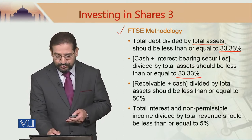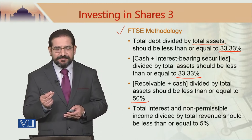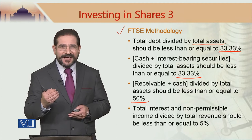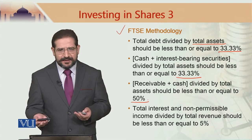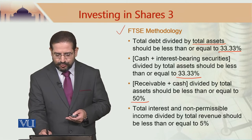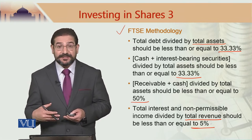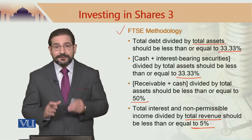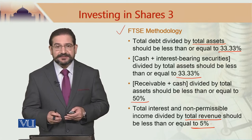Cash plus interest-bearing securities divided by total assets should not exceed 33.33%. Receivables plus cash divided by total assets should be less than or equal to 50%. They have changed the language slightly — instead of 'should be less than 50%', they say it can be 50%. Then total interest and non-permissible income divided by total revenue should be less than or equal to 5%, i.e., it should not exceed this 5% threshold. So this is the FTSE methodology, which is total-asset denominated.